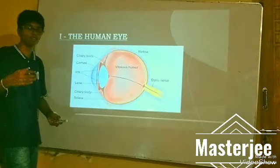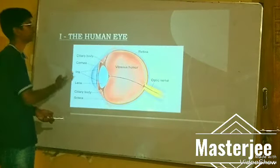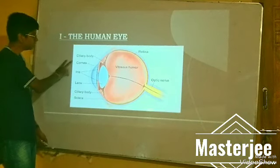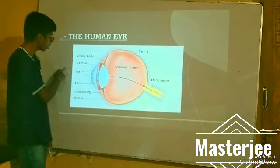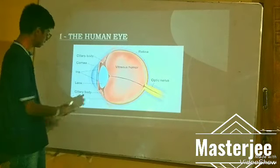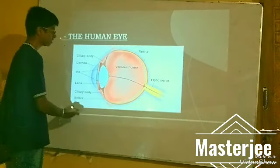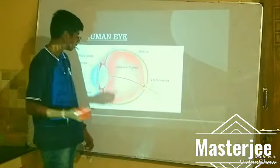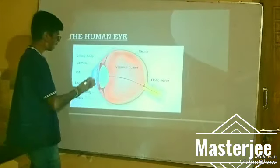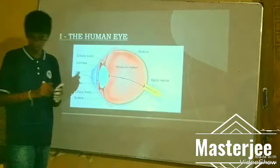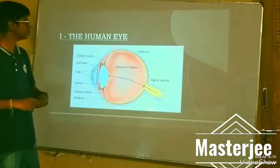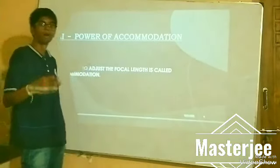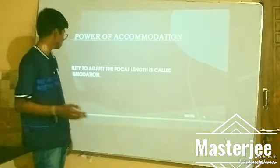Our first topic is the human eye. The human eye consists of ciliary muscles, cornea, iris, ciliary muscles, vitreous humor, retina, optic nerve, and aqueous humor. Our second topic is Power of Accommodation.